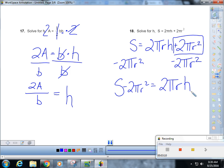What's being done to the h? It's being multiplied by 2 pi r. So I am going to divide both sides by 2 pi r. So you end up getting h equals s minus 2 pi r squared over 2 pi r.